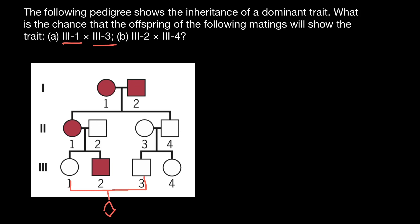Let's start with generation one. This is a dominant trait, so each parent here has to have the dominant allele. Let's say this is going to be dominant allele A in order to manifest this genetic disorder. So both of them have to have this dominant allele, and these are going to be their genotypes.